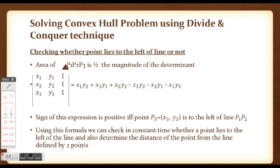To find the pmax point that is farthest from line p1-pn, we use the formula for the area of a triangle with vertices p1, p2, p3. Using the determinant form, the area is calculated from coordinates (x1, y1), (x2, y2), and (x3, y3). The sign of this expression is positive if and only if point p3 is to the left of line p1-p2. Using this formula, we can check in constant time whether a point lies to the left of a line and determine its distance from the line, allowing us to find the farthest point and recursively construct the upper hulls.